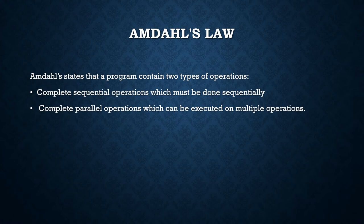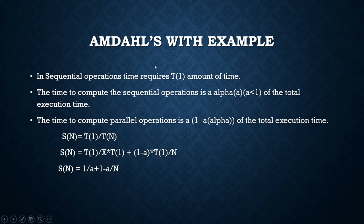In sequential operations, the time required is T(1), representing the total amount of time. According to Amdahl's law, there are mainly two types of operations, so the problem will have some sequential operations and some parallel operations. We already know it requires T(1) time to execute a problem using a sequential machine. The time to compute the sequential operation is a fraction alpha, where alpha is less than or equal to 1.